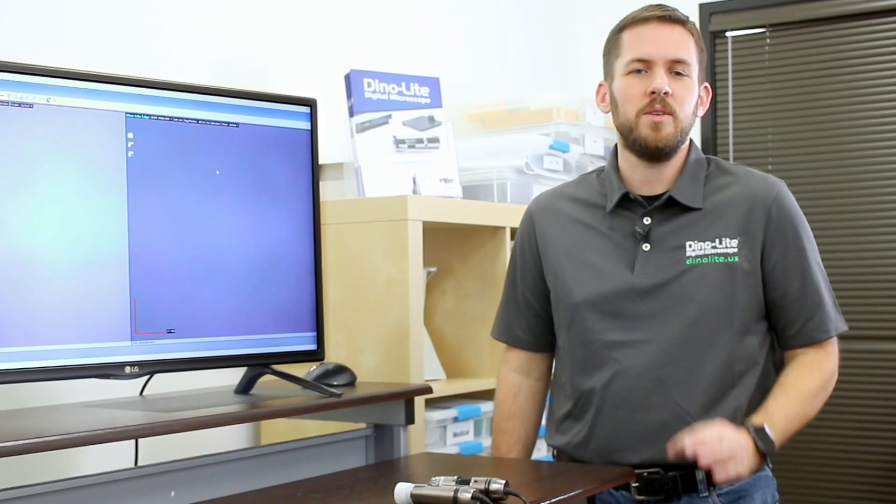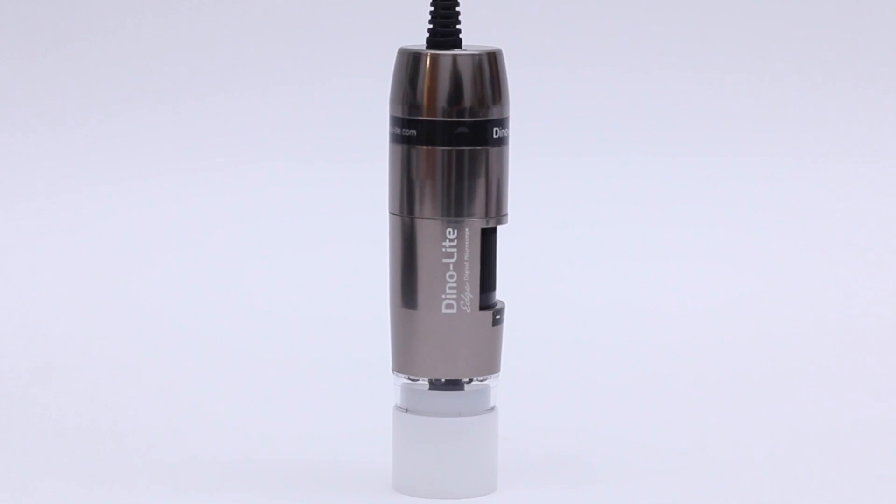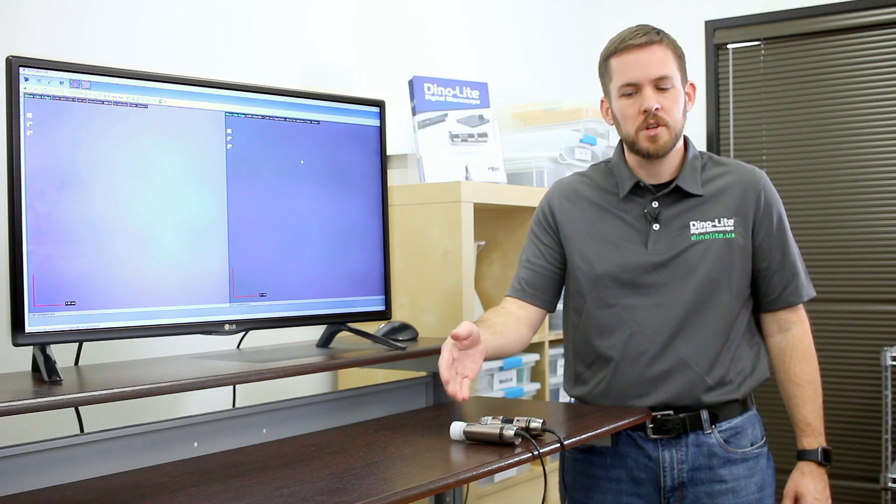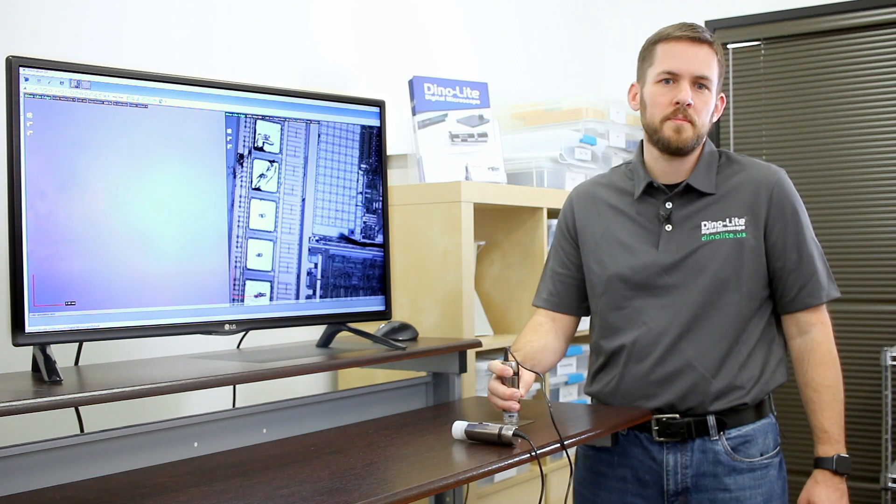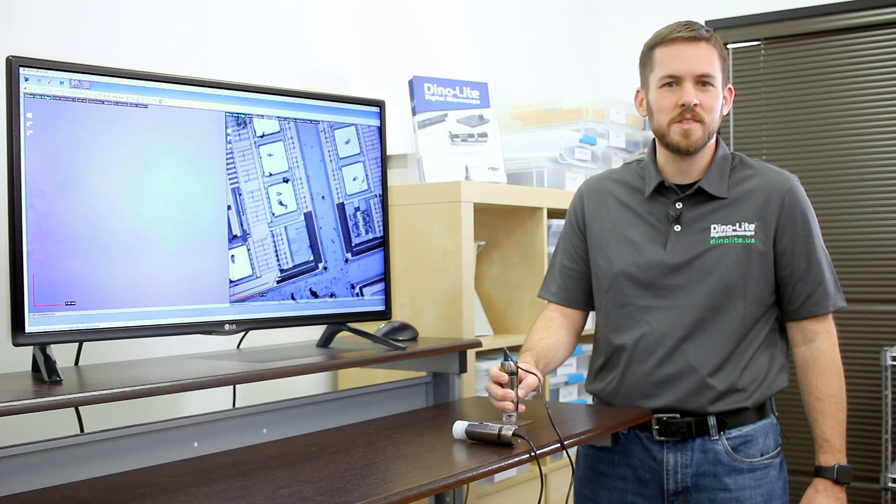Some applications just can't work with a stage and you have to use the scope handheld. To make this possible, we have included a front cap with each unit which acts as a standoff to enable handheld use. Simply attach the cap to the front of the microscope and hold it directly against the surface of the subject, then adjust the magnification to bring it into focus.